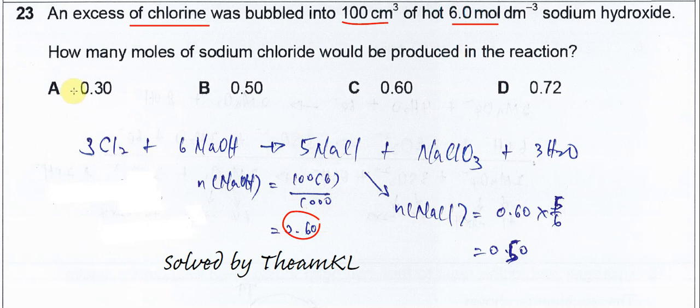So the question asks how many moles of sodium chloride are produced. So from this equation, of course, you need to know these equations to get a ratio. So the sodium chloride formed is 5 moles and 6 moles of sodium hydroxide used.